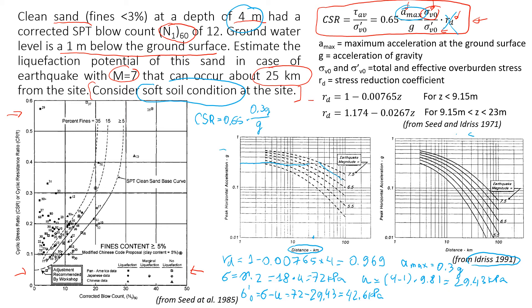Then multiply by the total vertical stress, which is 72, divided by effective vertical stress, 42.6, and times the stress reduction coefficient which is 0.969. So according to my calculations we're going to get about 0.319.